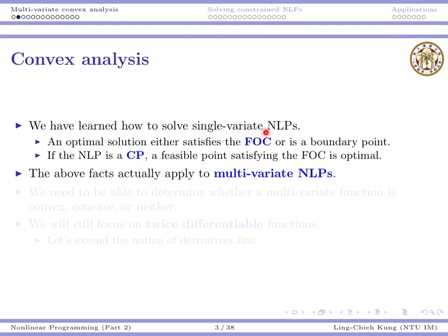We have learned how to solve single-variate nonlinear programs. An optimal solution either satisfies the first order condition if it is at the interior of the feasible region, or it must be at a boundary point. If a nonlinear program is a convex program, then a feasible solution satisfying the first order condition must be optimal. These ideas also apply to multivariate nonlinear programs — we still hope problems are convex so that the first order condition is necessary and sufficient for interior points, or we look at boundary points.